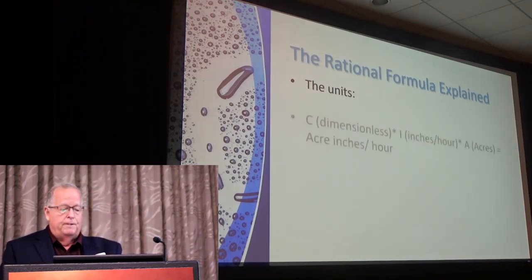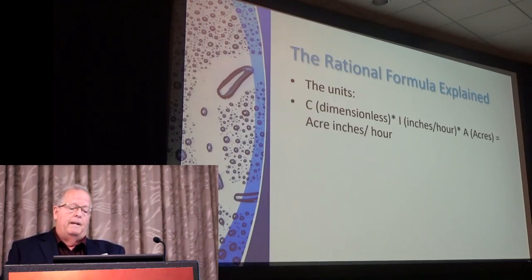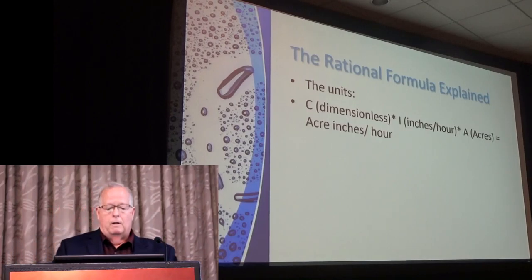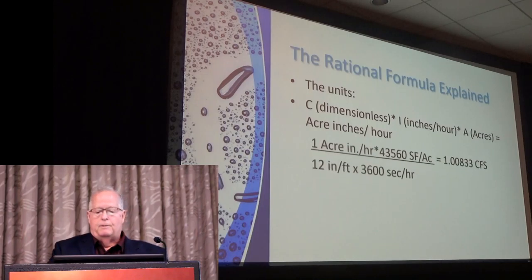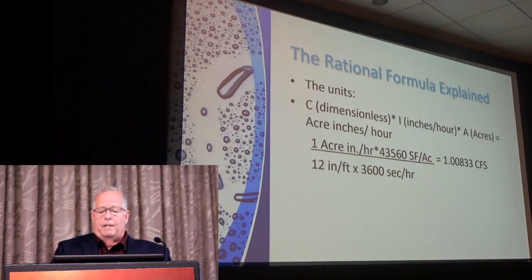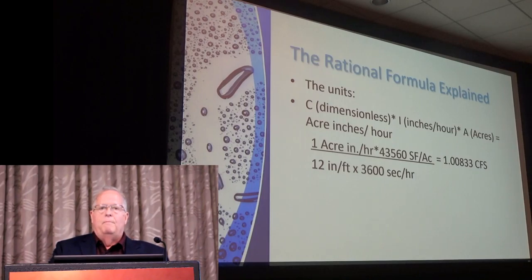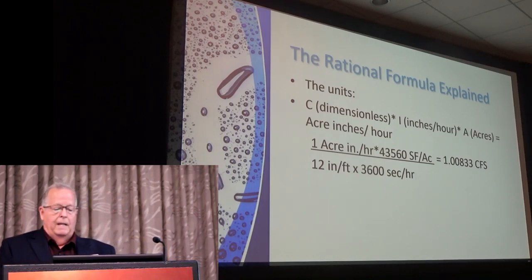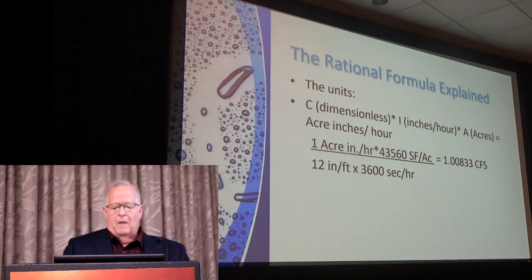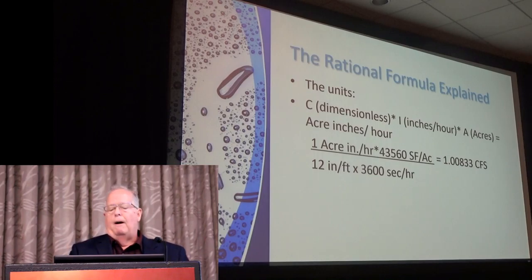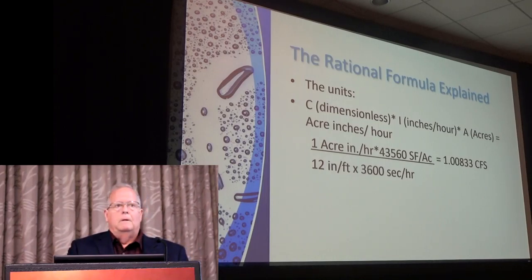Let's go through the units. C is a dimensionless coefficient, I is in inches per hour, and area is in acres, so multiplying together you get acre-inches per hour. There are 43,560 square feet in an acre, 12 inches in a foot, and 3,600 seconds in an hour, so one acre-inch per hour equals 1.00833 cubic feet per second. When I developed the hydrograph method, we actually put 1.008 in there because the numbers weren't working out right. That's why some call this the 'rational' method — the units work out so that you use a multiplier of essentially 1 to get from acre-inches per hour to CFS.